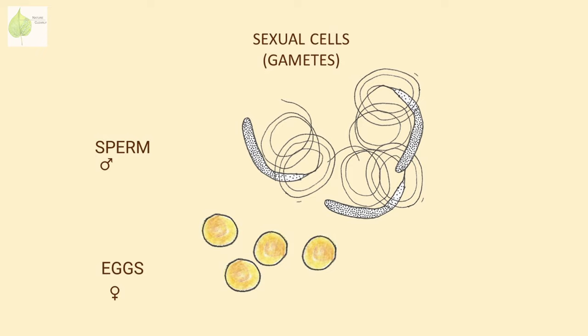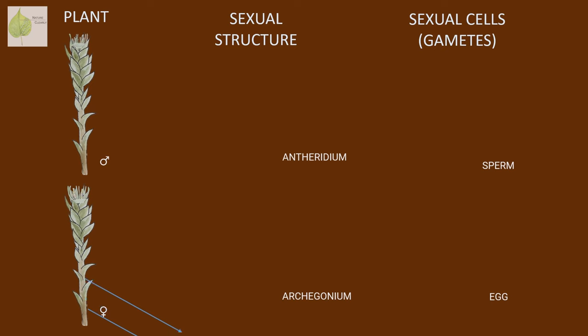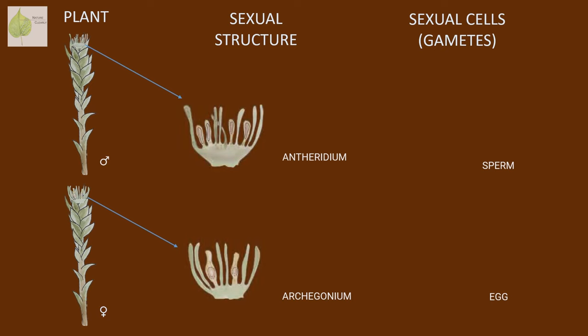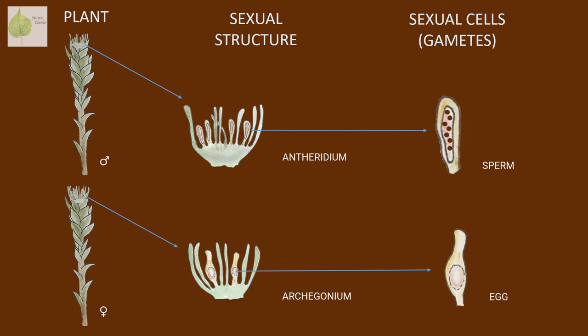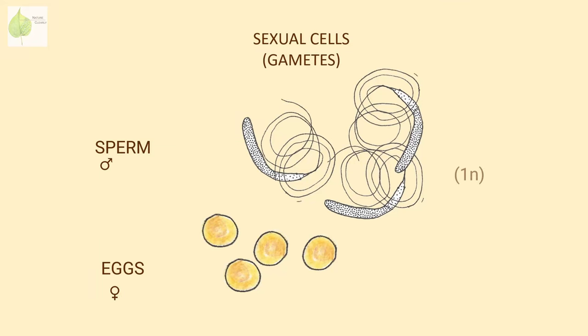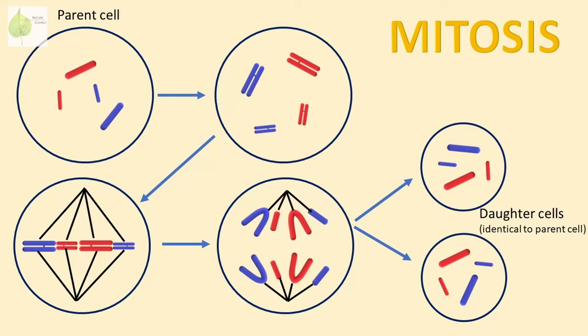Both male and female sexual structures produce sexual cells called gametes via cell division. The male sexual structure is called an antheridium, and it produces many male gametes called sperm. The female sexual structure is called an archegonium, and each archegonium produces one egg. Both sperm and eggs are haploid, just like the gametophyte, since they are created by a type of cell division called mitosis, in which a parent cell divides into two identical daughter cells with the same number of chromosomes.